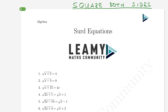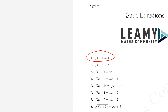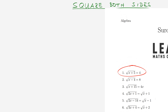You're going to want to square both sides to get rid of the square root and simplify the equation. I'll do a couple of examples. Starting with the very first question — simple enough. So: the square root of x plus 5 is equal to 4.